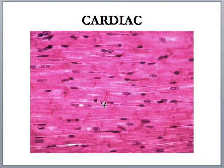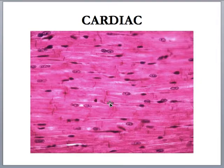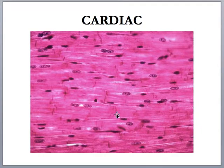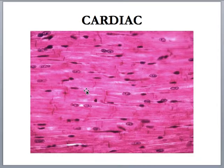Intercalated discs are specialized gap junctions that allow for really fast conduction of electrical impulses. Your heart has two sets of chambers — a right and left atrium, and a right and left ventricle. The atria have to contract together very quickly and synchronized to push blood in one direction, and the ventricles have to contract together synchronized as well. So intercalated discs ensure fast conduction of the electrical impulse. Cardiac muscle is also much more branched than skeletal muscle, and the dead giveaway is those intercalated discs. This is under involuntary control — we don't have to think about our heart contracting.